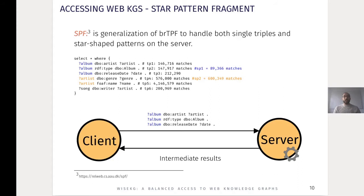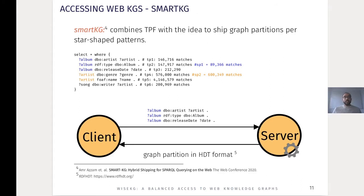Star Pattern Fragment (SPF) is another Linked Data Fragments interface — it is basically a generalization of BRTPF. The SPF server is not only able to handle single patterns but also able to handle star patterns, enabling high performance by reducing the intermediate results shipped from server to client. But SPF still struggles with queries that have high intermediate results. SmartKG combines triple pattern fragment to answer single triple patterns with the idea to ship graph partitions to answer star patterns; the server sends back to the client indexed and compressed graph partitions in the HDT format. SmartKG enables a highly available server but at the cost of sending high intermediate results, especially for high selective queries.